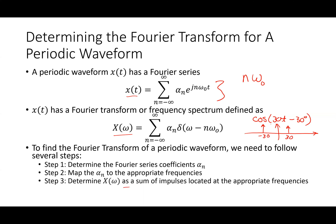In reality there are two graphs that go with this. For cosine of 30t minus 30 degrees, one graph is the magnitude of X of omega — because X of omega is a complex number. The other graph is the angle. For the angle, there's an impulse going down at 30 radians per second and an impulse going up at negative 30 radians per second.